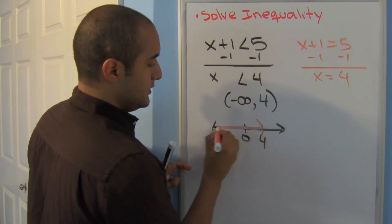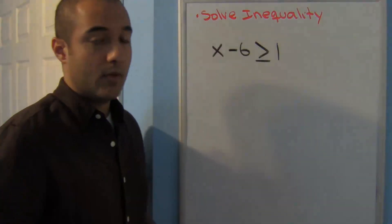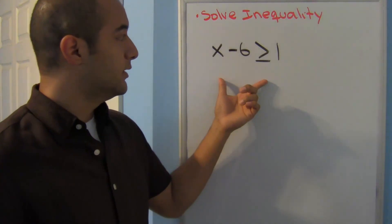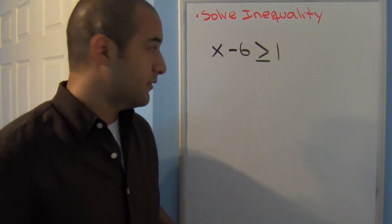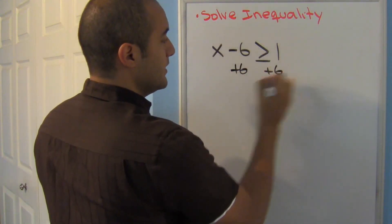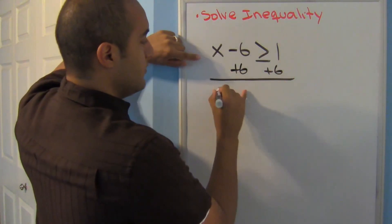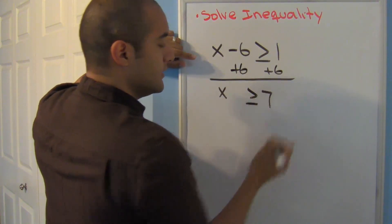All right, what about here? Well, if you guessed adding 6 to both sides, you're correct. I'll simply add 6 to both sides. Bring down that x greater than or equal to 7.